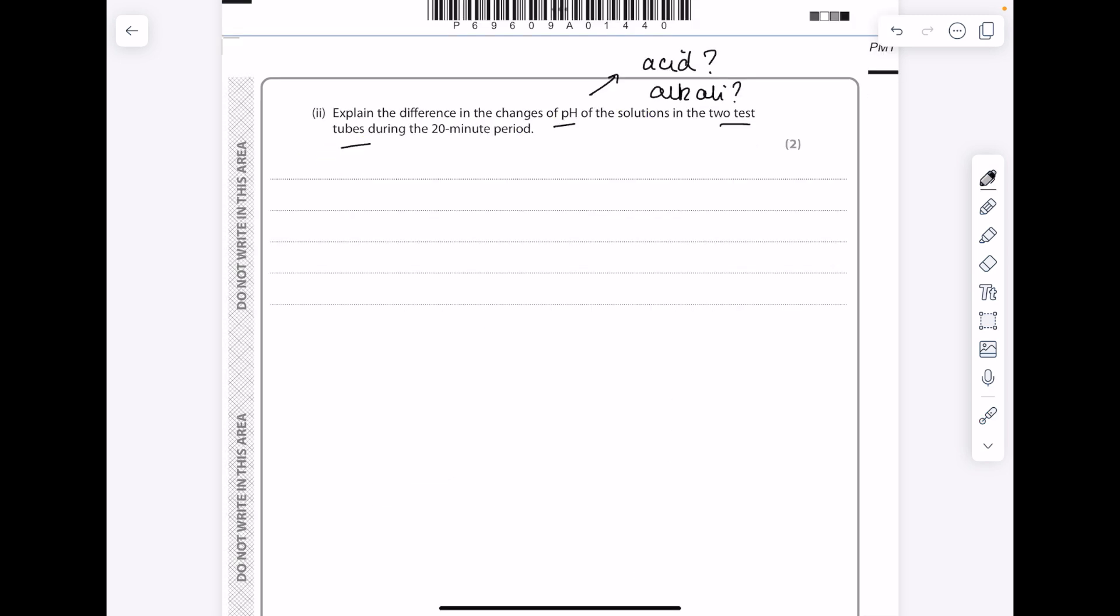So without lipase inhibitor the pH falls faster. Why? Due to lipids being digested into fatty acids, and it's those fatty acids which have a low pH.